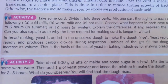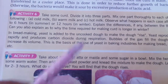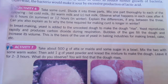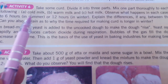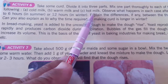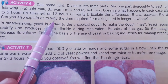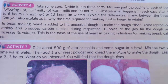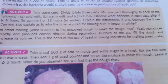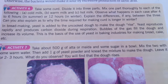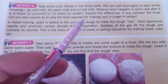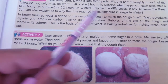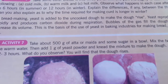Activity: take some curd and divide it into three parts. Mix one part of curd into cold milk, one part into warm milk, and one part into hot milk. In each case, after 4–6 hours in summer and 12 hours in winter, observe the results. In summer the bacteria will grow, in cold milk the bacteria will not grow, and in warm milk the bacteria will grow and convert milk into curd.